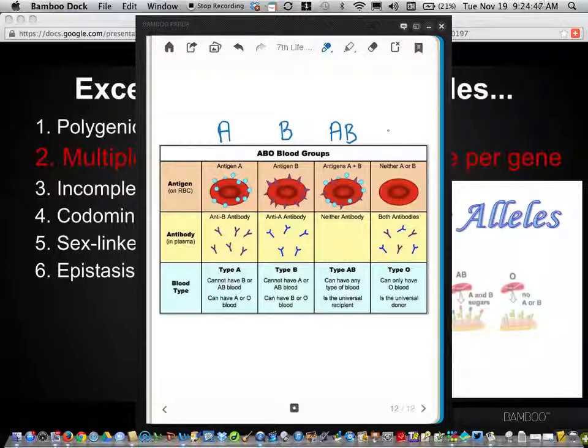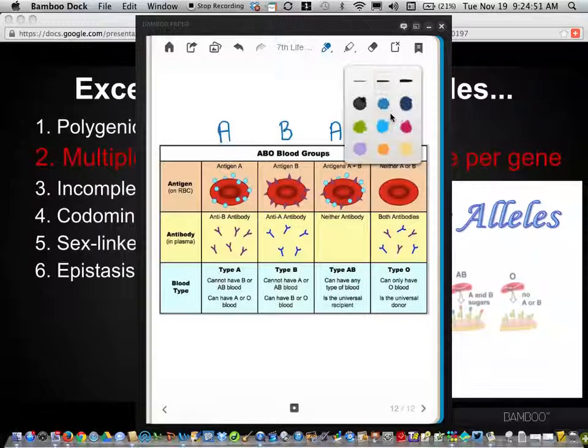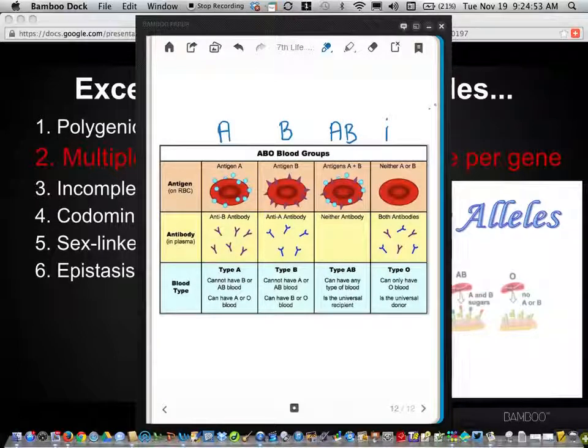And here's where it gets to the multiple allele part. There's a third allele called little i, and that allele codes for a message that says do not make A or do not make B.